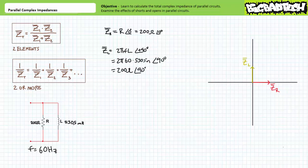Before we perform the total impedance calculation for this parallel relationship, let's take a look at these individual components. Both our elements have a magnitude of 200 ohms. Does this mean the 200 ohm resistor is functionally equivalent to the 530.5 millihenry inductor at 60 hertz? Absolutely not. They are entirely different entities and the impedance diagram clearly illustrates they are pointed in two totally different directions. Again, you must take direction into account, and the moment you forget to take direction into account is the moment you fail.